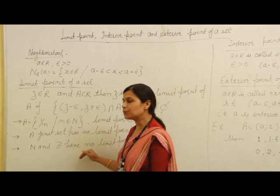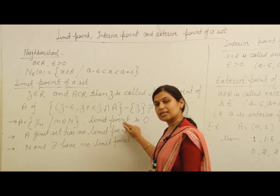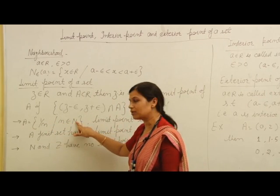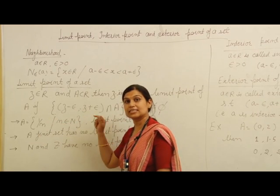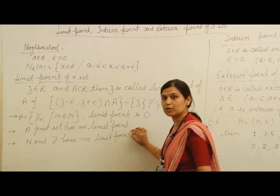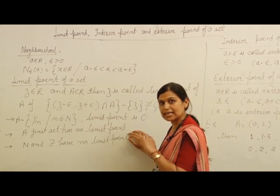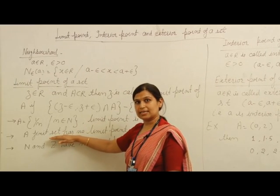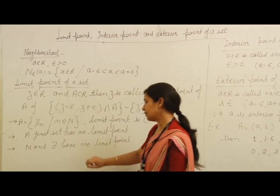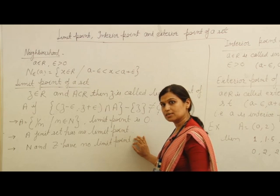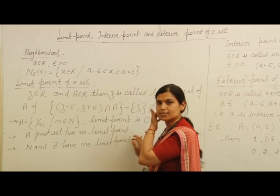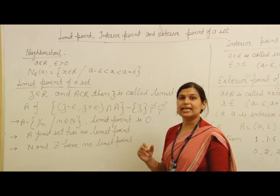There are some important results about limit points. First, it is not necessary that the limit point is an element of that set A. For example, let A = {1/N} where N is a natural number; the limit point of this set is 0, but 0 is not an element of this set. Second, a finite set has no limit point. Also, it does not mean that every infinite set has a limit point — for example, the natural numbers N and integers Z have no limit point. However, every infinite bounded set has at least one limit point.